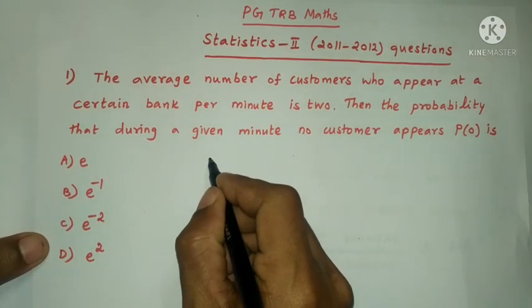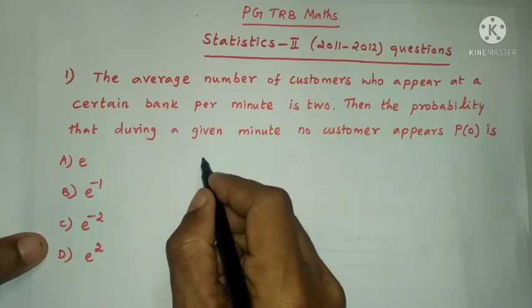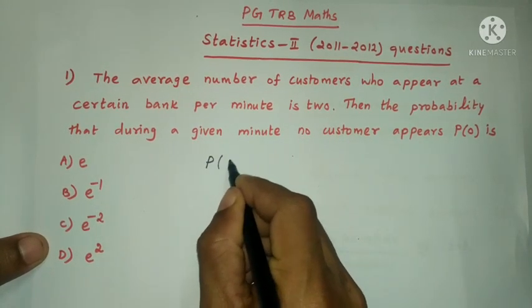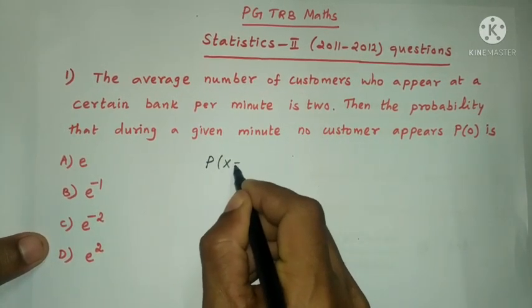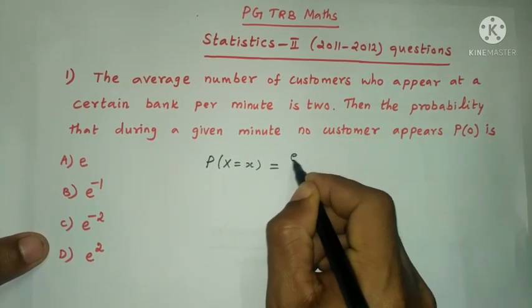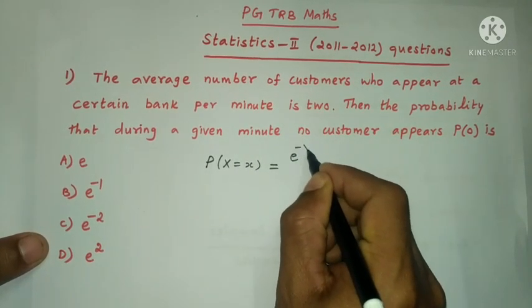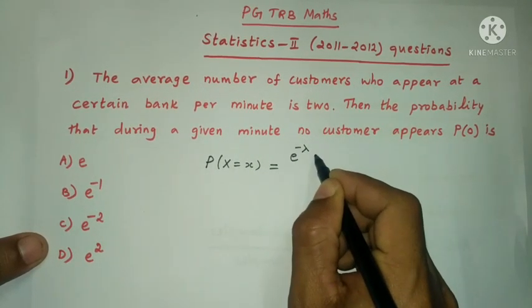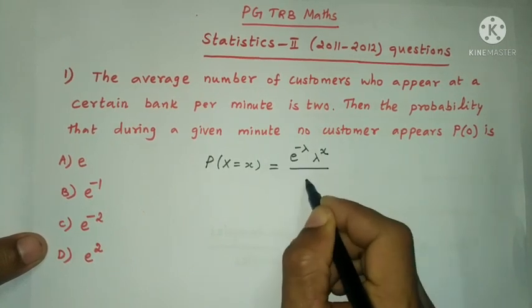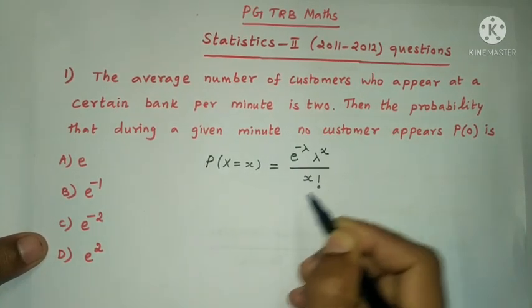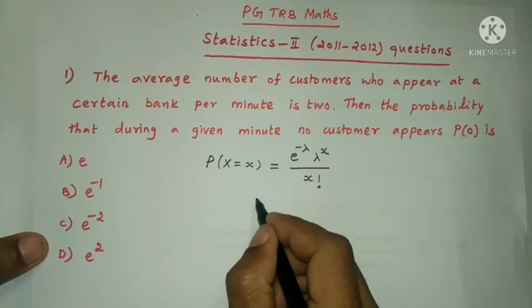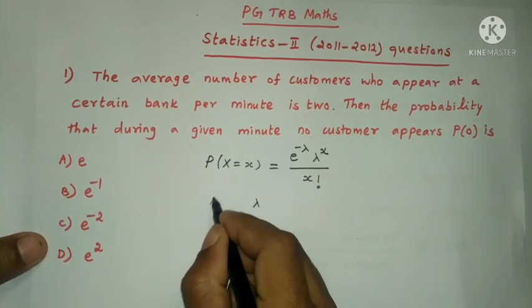This is a Poisson distribution. Poisson distribution has the general formula: P(X = x) = e^(−λ) × λ^x / x!, where λ is the mean.